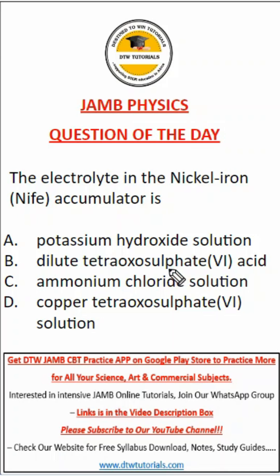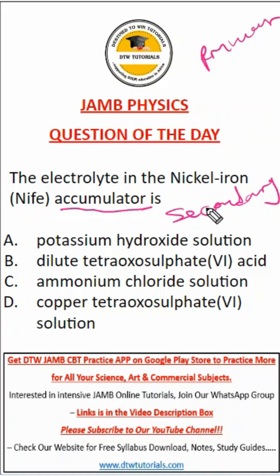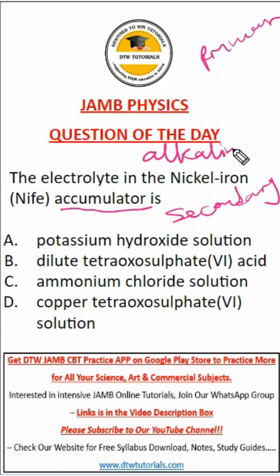We will get this WAEC physics question. It asks: what is the electrolyte in the nickel-ion accumulator? First, let's understand what an accumulator is. An accumulator is a type of secondary cell. We have two types of cells — primary cells and secondary cells — and this accumulator belongs to the secondary cell category.